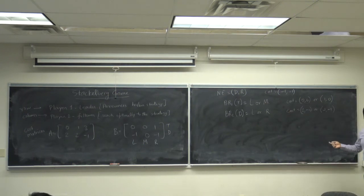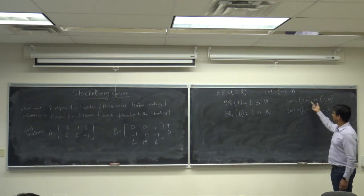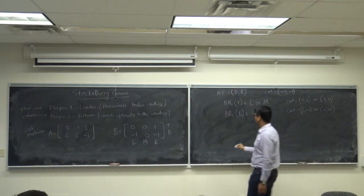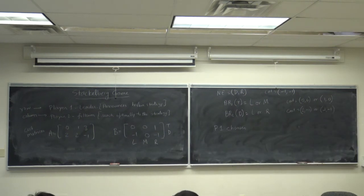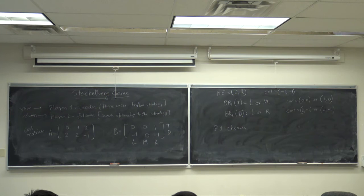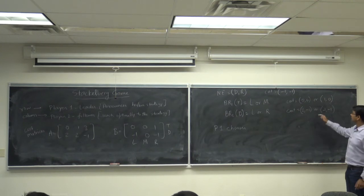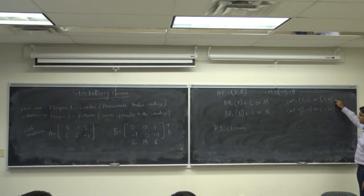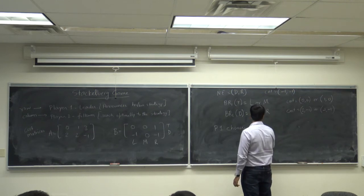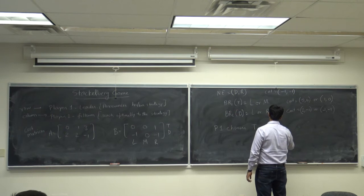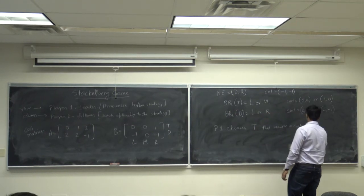This brings up the case where you have two equal costs. If player one is player one, what would you choose? Jayanth says it is better to pick T, because in the worst case player one secures a cost of 1, whereas choosing D could result in a cost of 2 against the worst possible action of player two. So P1 chooses T, securing a cost of 1.